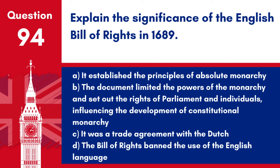Question 94: Explain the significance of the English Bill of Rights in 1689. The document limited the powers of the monarchy and set out the rights of parliament and individuals, influencing the development of constitutional monarchy. The English Bill of Rights is a fundamental document in the political history of Britain and the wider world.